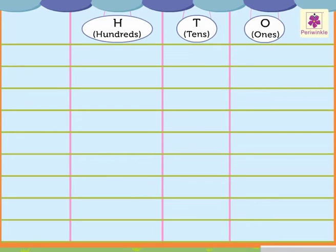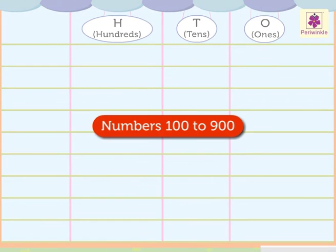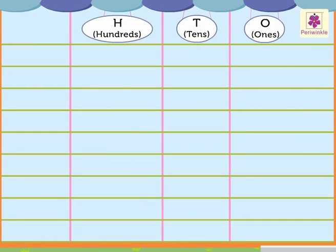Now let us see how the numbers 100 to 900 are written in the place value chart. The chart has columns for hundreds, tens, and ones. Let us start with 100 — it has one hundred, zero tens, and zero ones. We place the one of the 100 in the hundreds column.